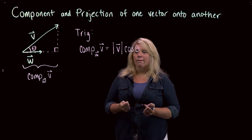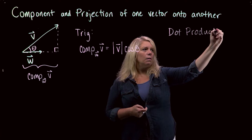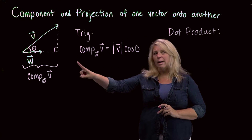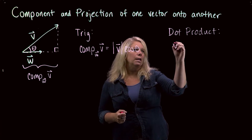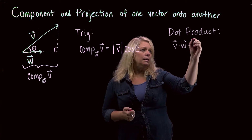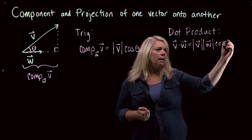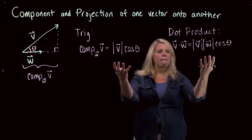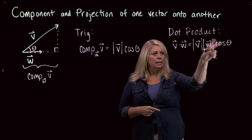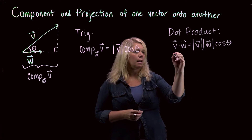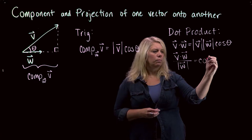We also have, from the dot product definition, a relationship that involves cosine theta for these two vectors. From our dot product relationship, V dot W equals the magnitude of V times the magnitude of W times cosine theta. Looking at these two equations, we have magnitude of V times cosine theta appearing in both. So if we solve for magnitude of V times cosine theta, we get a relationship we can use.